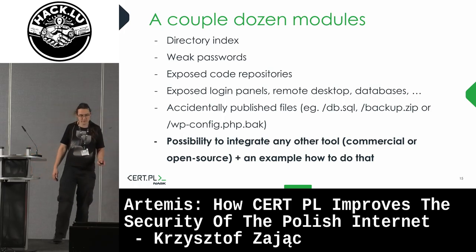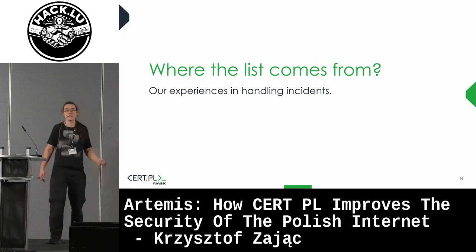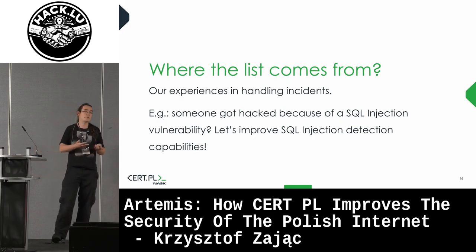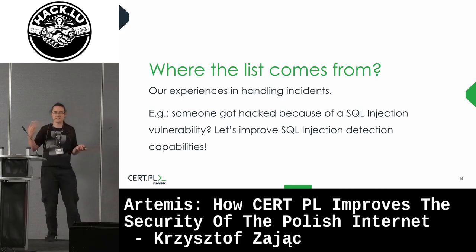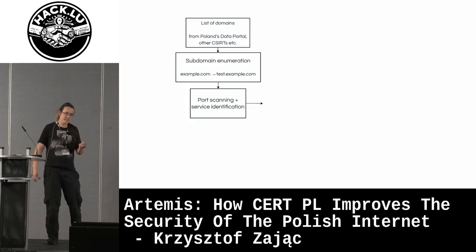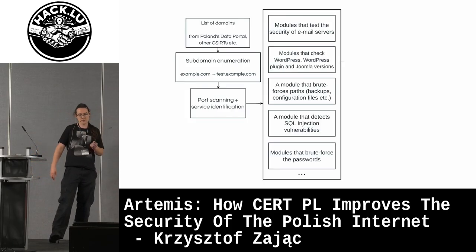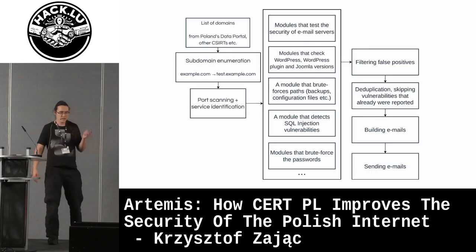This system allows you to integrate any other tool, commercial or open source. The list of checks comes from our experience in handling incidents — for example, we learned that a public entity in Poland got hacked because of an SQL injection vulnerability, so we tried to improve our SQL injection detection capabilities. The system takes a list of domains, finds subdomains, scans ports, finds vulnerabilities, filters false positives, and builds reports.